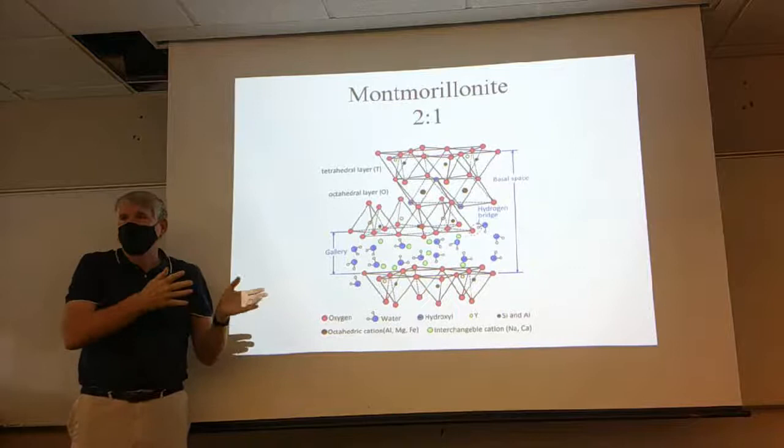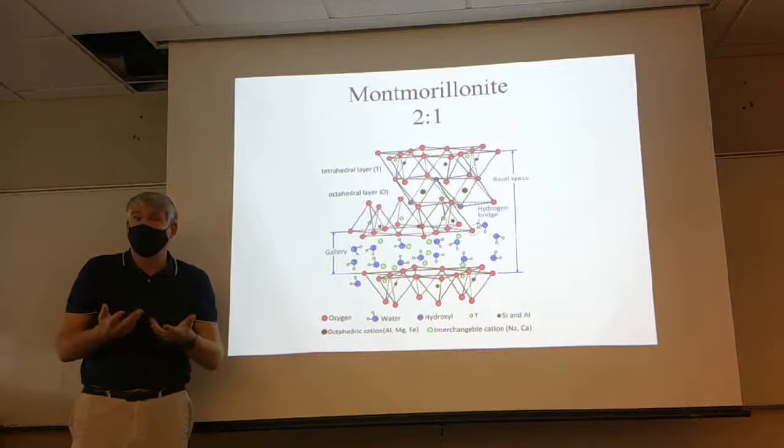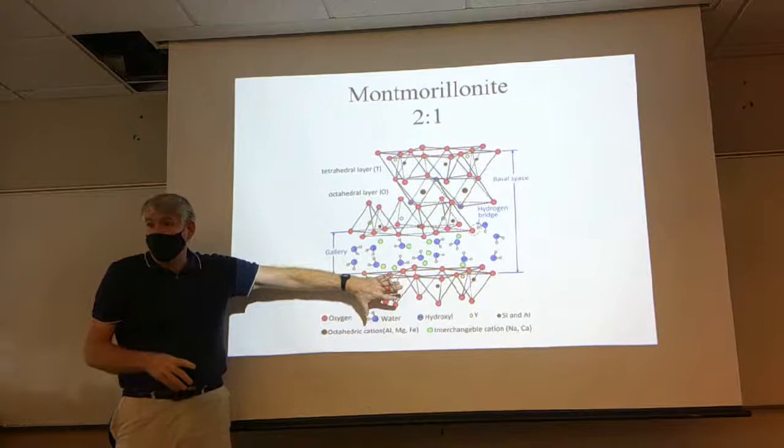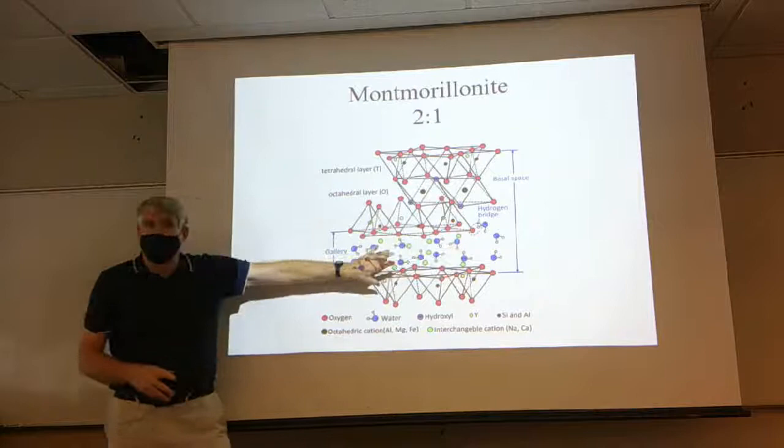The key point is that one-to-one clays like kaolinite aren't chemically reactive, whereas two-to-one clays like smectites are. The permanent charge is controlled primarily by isomorphic substitution — whether it's substitution directly in the octahedral and tetrahedral layers, or the substitution of different cations between layers. And again, this is a permanent charge — it's not going to change with the particular mineral.